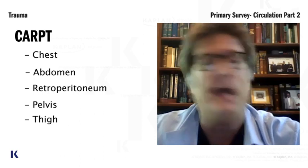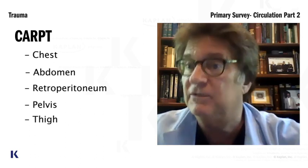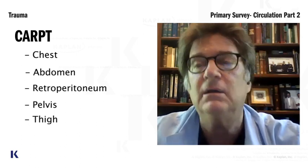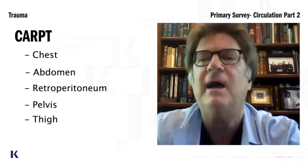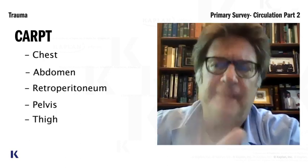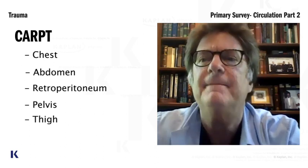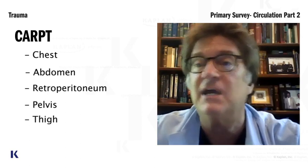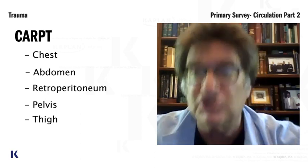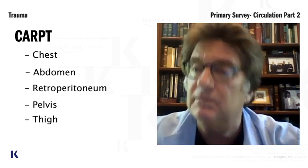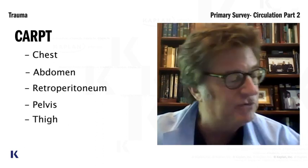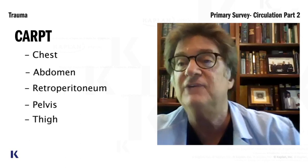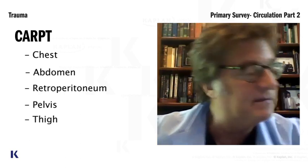That acronym CARPET, I use it all the time, even at my level. When I see a patient in the emergency room in shock with no blood outside, I think: chest, abdomen, retroperitoneum, pelvis, and five. And I want you to do it too — even when you write up the patient, document there's no evidence of bleeding in chest, abdomen, retroperitoneum, pelvis, or five.